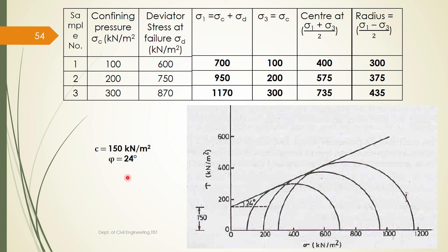An important point to note is that the scale taken on the sigma axis and the tau axis should be the same when drawing the Mohr circle. This is how you solve the problem.